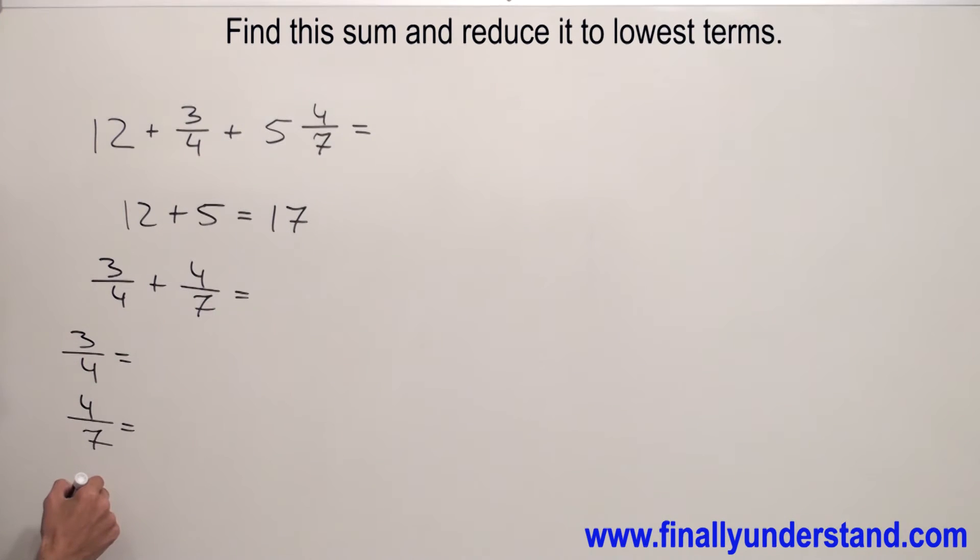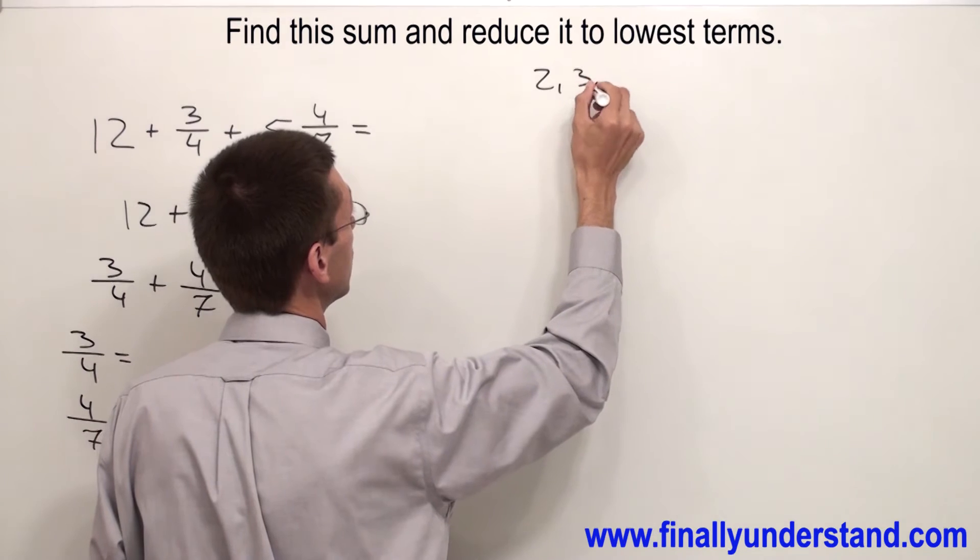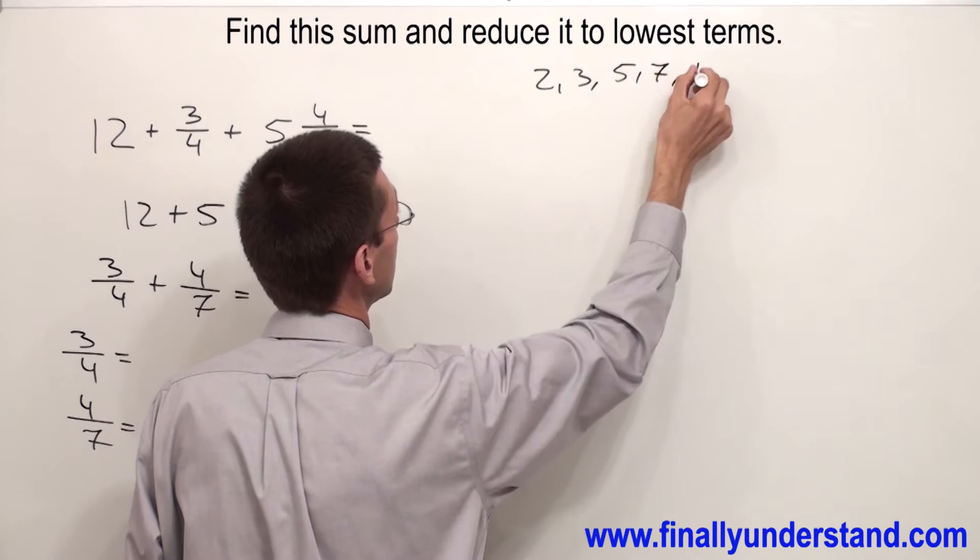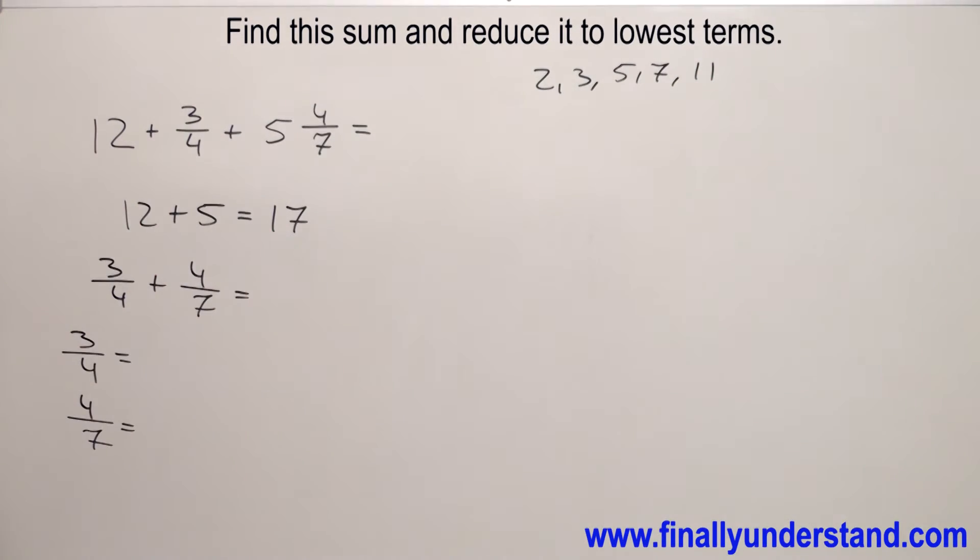Now you are supposed to remember that 7 is a prime number. Prime numbers are 2, 3, 5, 7, 11. This is enough for this problem. Anytime you have in the denominator a prime number, and the second denominator is lower than the prime number, you simply multiply the denominators.